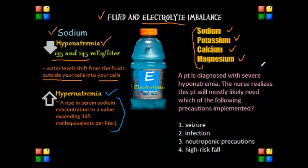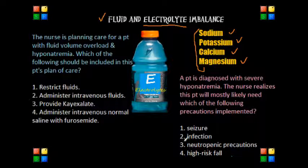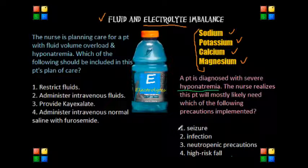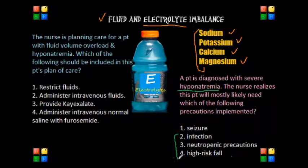Let's look at a sample question we may encounter on the NCLEX exam. A patient is diagnosed with severe hyponatremia and the nurse realizes this patient will most likely need which of the following precautions: one, seizure precautions; two, infection precautions; three, neutropenic precautions; or four, higher risk for falls? Looking at each choice, high risk for falls, neutropenic precautions, and infection precautions are not specifically indicative for hyponatremia. Since sodium affects the central nervous system, severe hyponatremia can lead to seizures. Therefore, seizure precautions — such as a quiet environment, side rails up, and an oral airway at the bedside — would be important. The correct answer is seizure precautions.